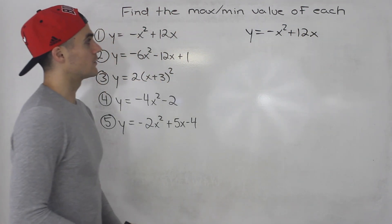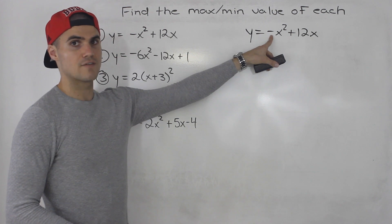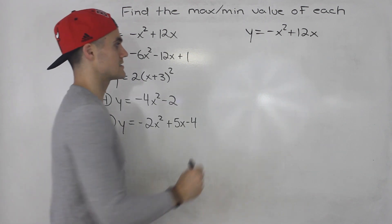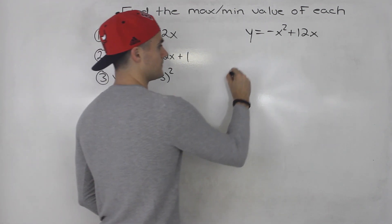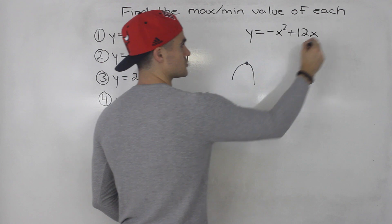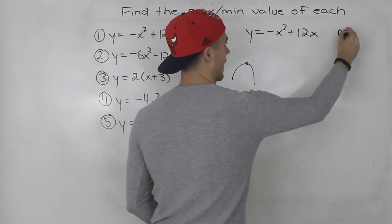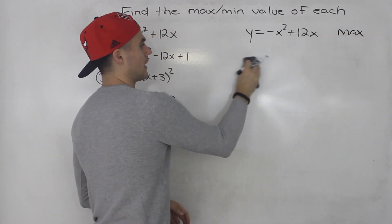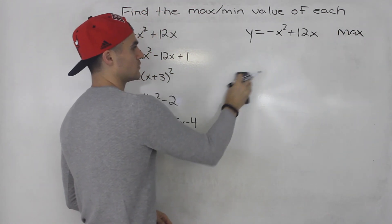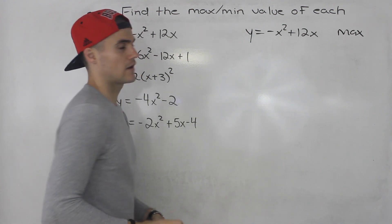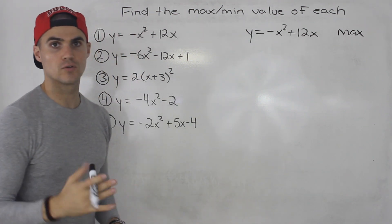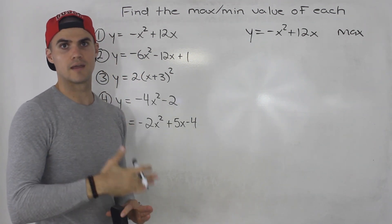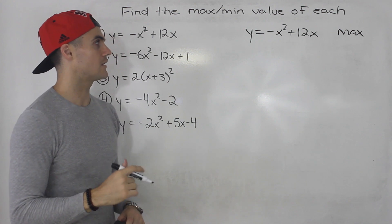First thing to notice: the a value is negative, so that means that this parabola is going to be opening down, which means it's going to have a max value. What we have to do is find the y value of the vertex. The y value of the vertex always gives you the min or max value.